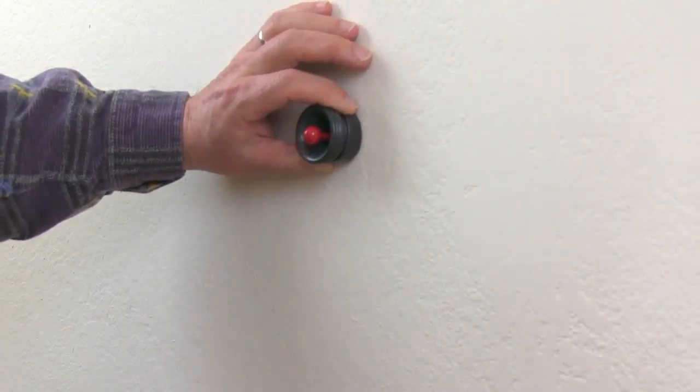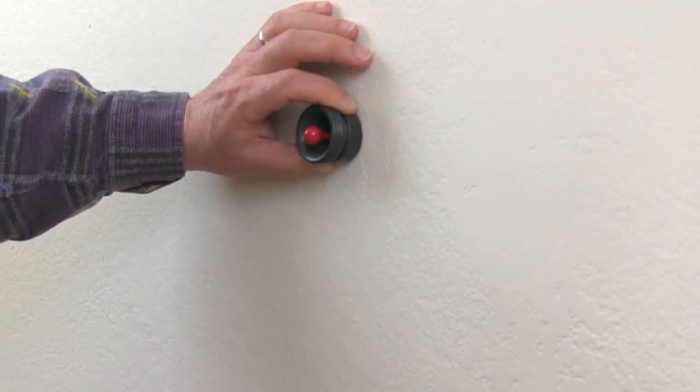Now if this wasn't so heavily textured and the wall wasn't so thick, I could let go of this and the magnet would hold it on there. However, there's so much stuff over this nail, it's not going to do it.